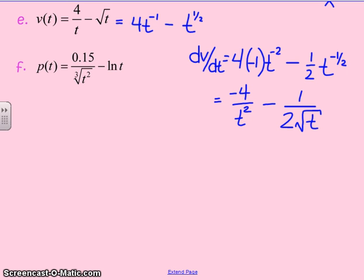For the very last one, I gave you something real complicated. Again, I'm going to rewrite it first. 0.15 times t to the negative 2 thirds minus ln of t.